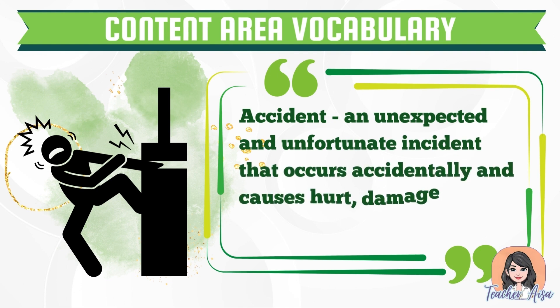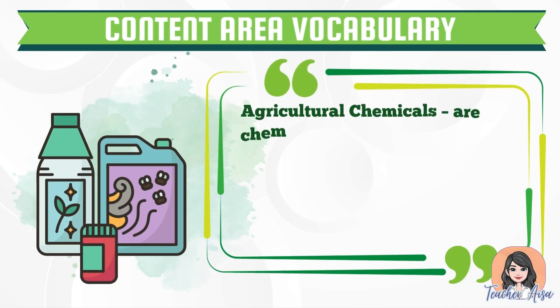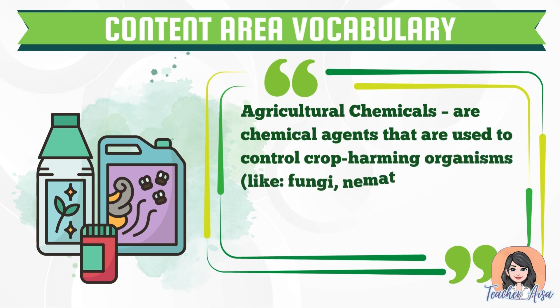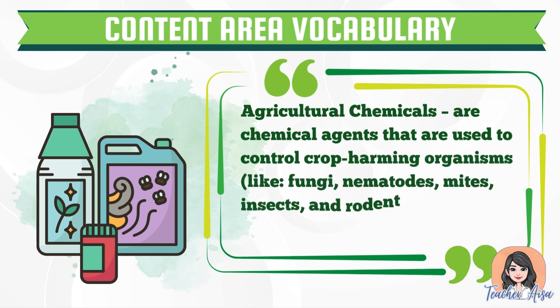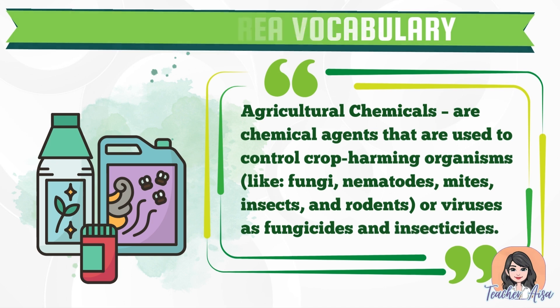First, let us have accident — an unexpected and unfortunate incident that occurs accidentally and causes hurt, damage, or injury. Next, agricultural chemicals — they are chemical agents used to control crop-harming organisms like fungi, nematodes, mites, insects, rodents, or viruses, such as fungicides and insecticides.